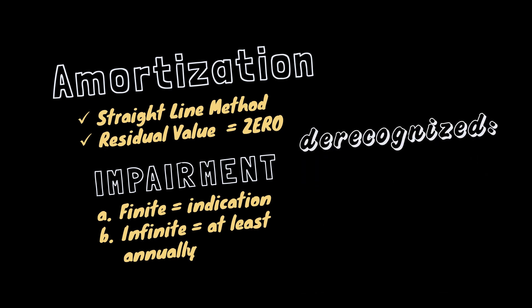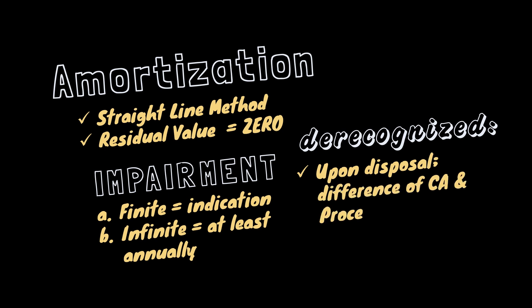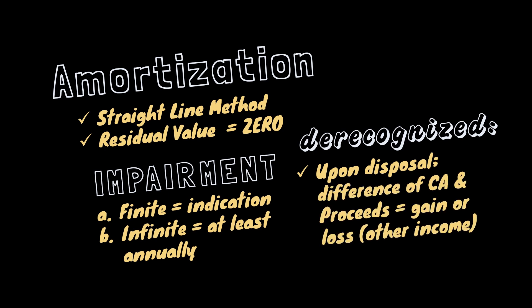Finally, regarding derecognition: the intangible asset is eliminated from the balance sheet when it is disposed, with a gain or loss arising from the difference between the net proceeds and the carrying amount, or when future economic benefits no longer exist.